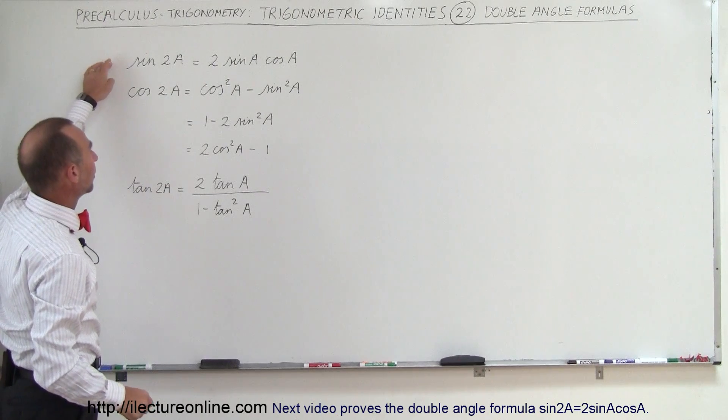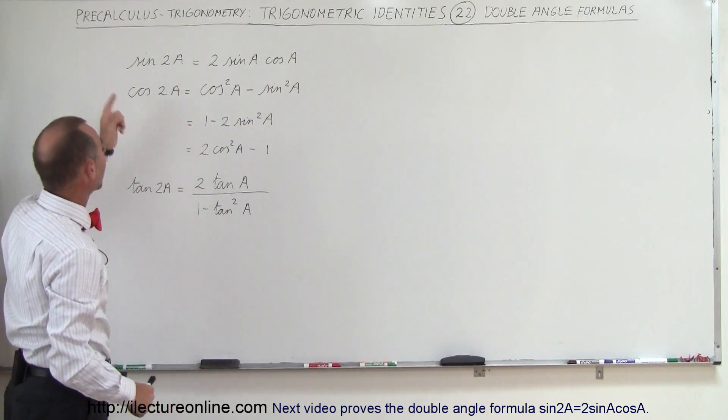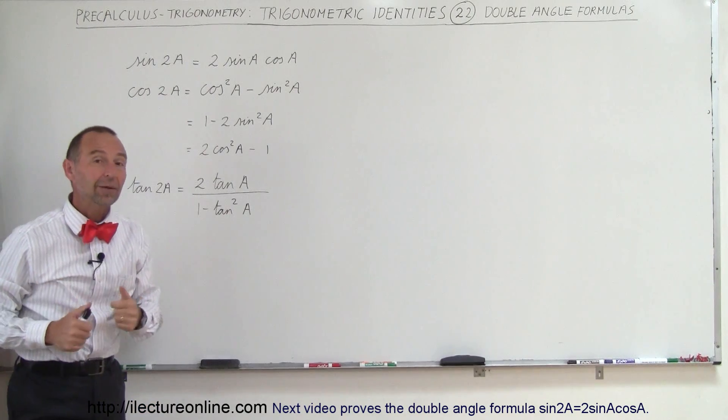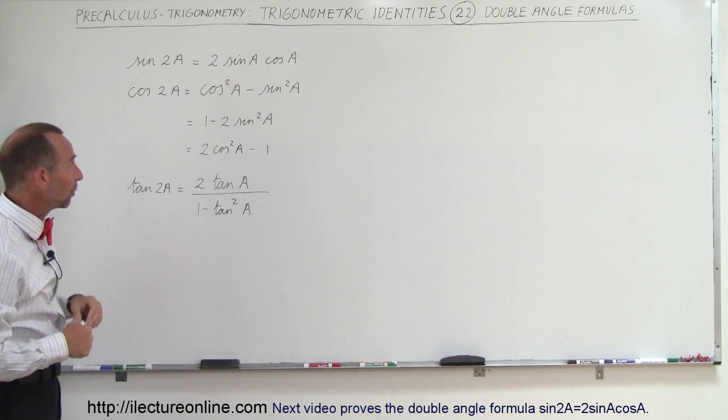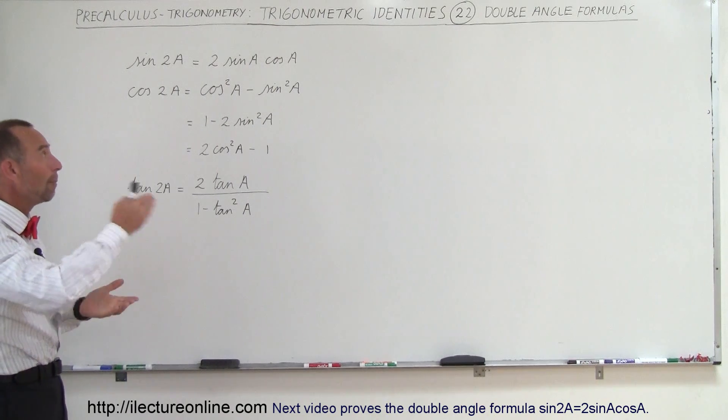Especially this one right here: 2 times sine of A cosine of A. If you realize that's equal to sine of 2A, that is very helpful in a lot of situations. Both in physics and in calculus, it's nice to be able to go back and forth.